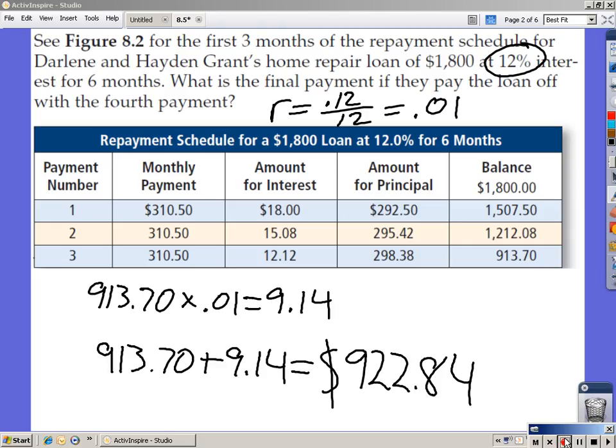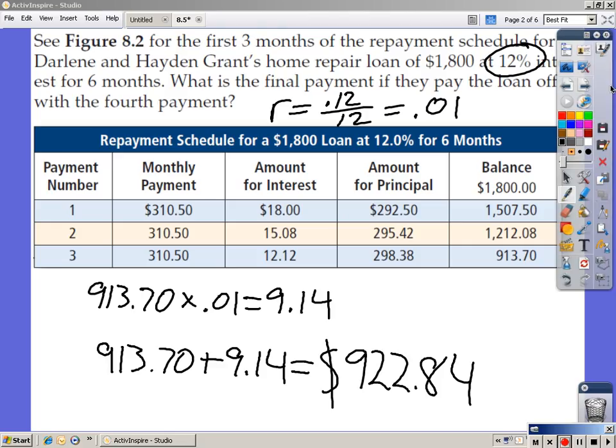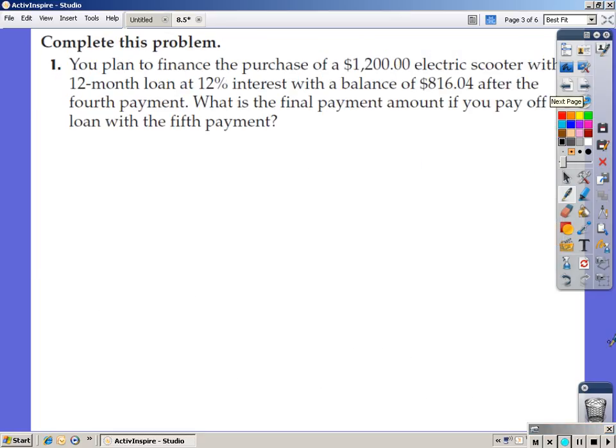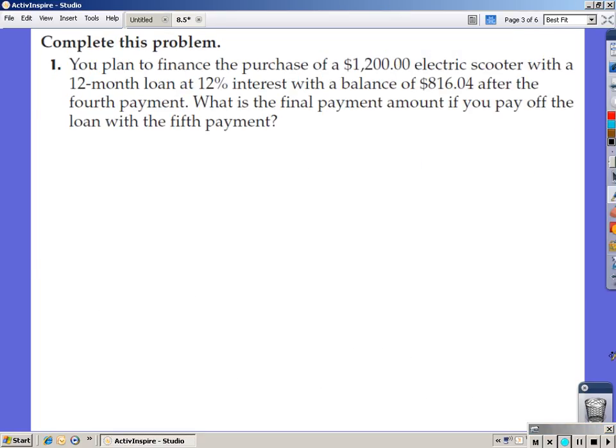922.84 is your payoff. That is what you actually owe at this time, the balance plus the interest. Pay that amount instead of 310.50, and you are done with the loan. Let's go on to problem number one in your homework. I'll push pause, give you a couple minutes, go ahead and try that now.